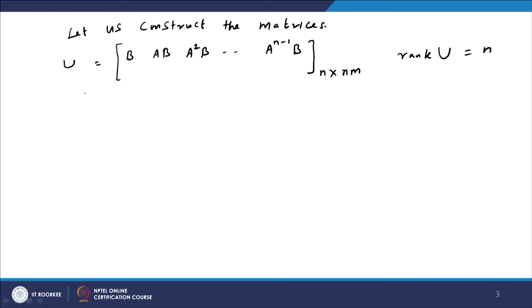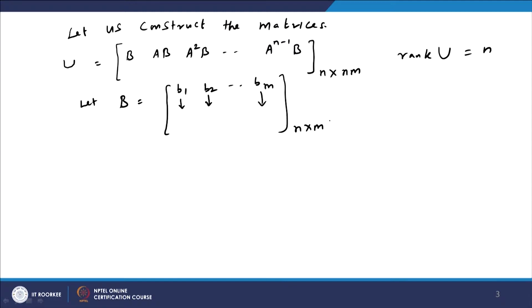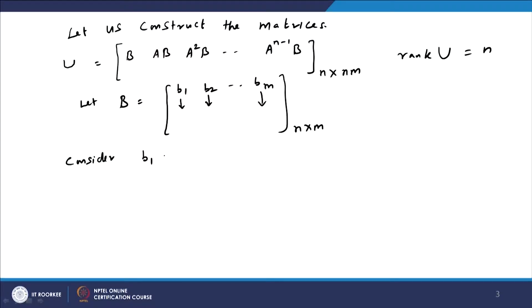Now let the columns of matrix B be B₁, B₂, ..., Bₘ, where B is the given n×m matrix. Let us consider the first column vector B₁. If it is completely zero, we will omit it and go to the next one. But let us assume that B₁ has at least one non-zero entry, so we consider B₁ as a non-zero vector.